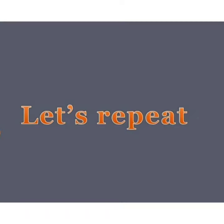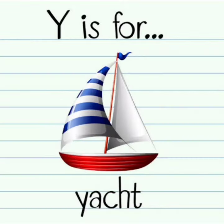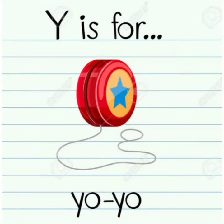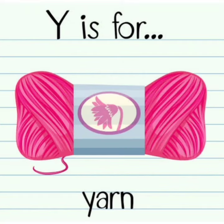Let's repeat it once again. Sound words of Y are: Y for YAT, Y for YOYO, Y for YOK, Y for YAN.